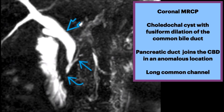On this coronal MRCP, we see a choledochal cyst showing fusiform dilatation of the common bile duct. The pancreatic duct joins the common bile duct in an anomalous location, as evidenced by the straight arrow. This creates a long common channel that measured approximately 1.8 centimeters in length, as shown by the hooked arrow.